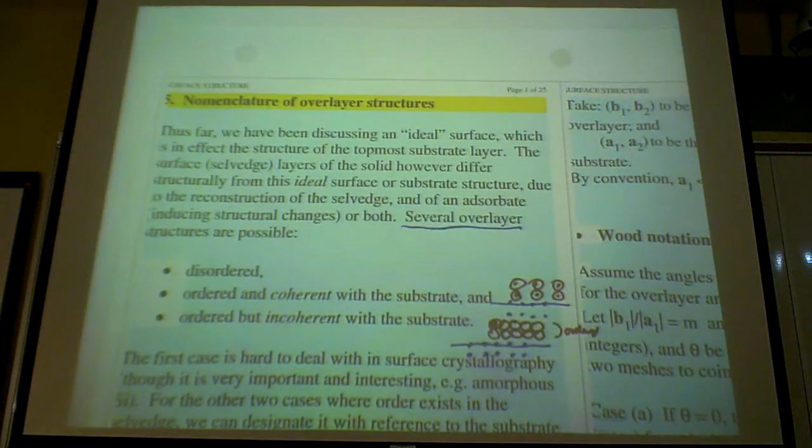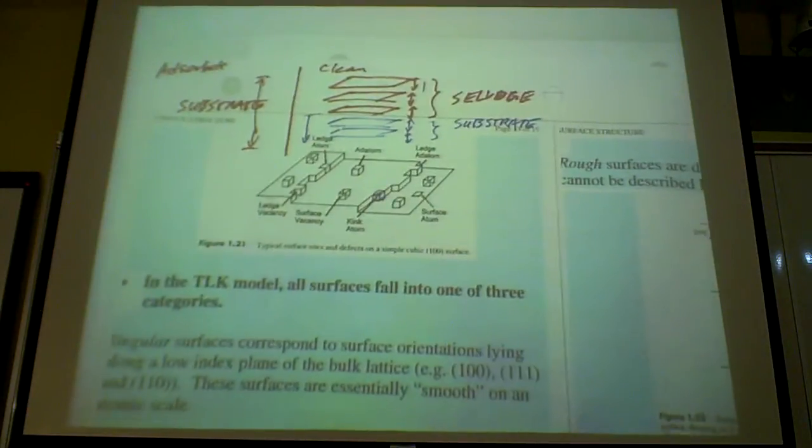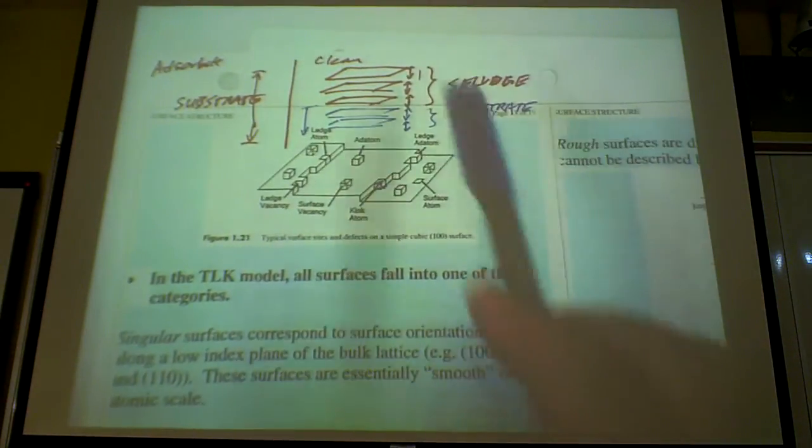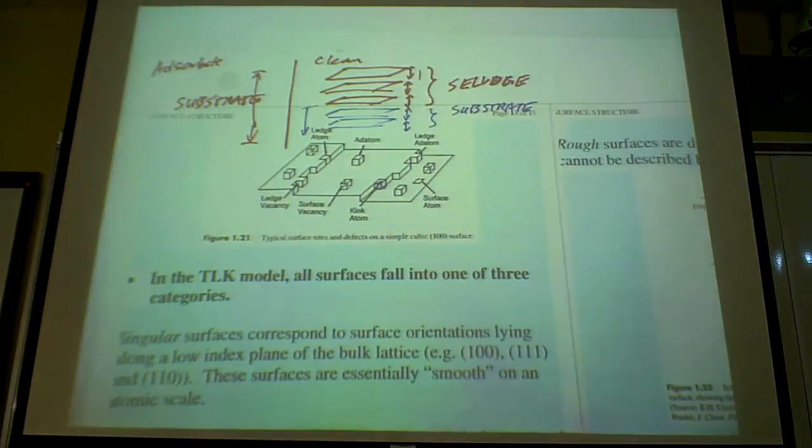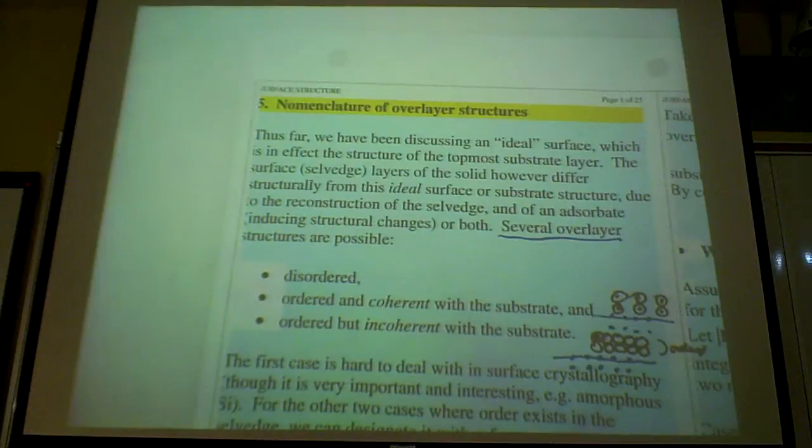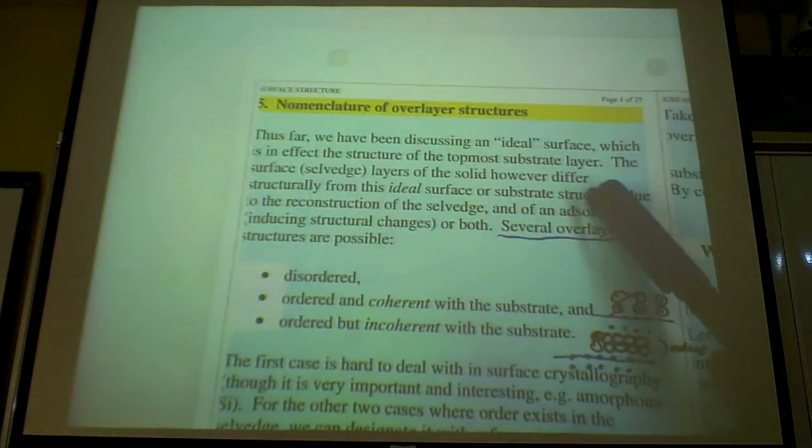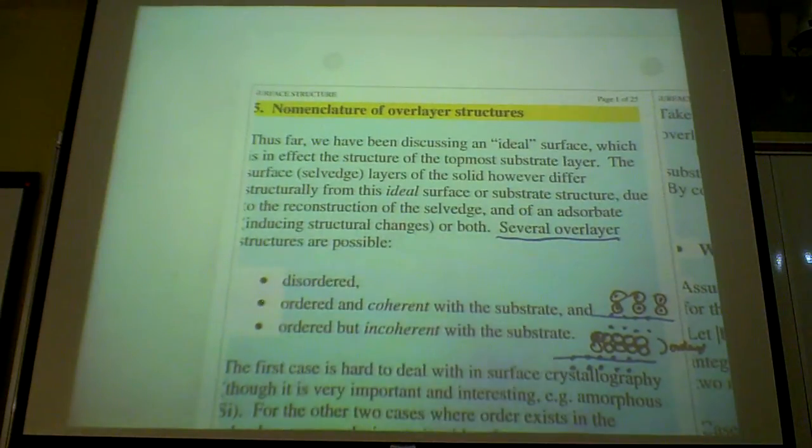And so this, the selvedge, of course, the red layer that we've been talking about. The red layer up here, of course, will change because due to reconstruction. Because you have the driving force, of course, is due to the termination of the surface. When you terminate, you no longer have the equal amount of atom on top of your layer. And so the layer is expected to adjust itself. And that's why you do have these deviations from the ideal surface that you have.